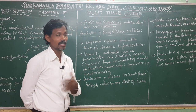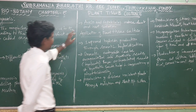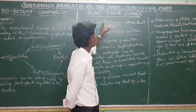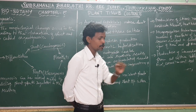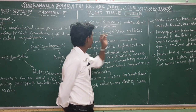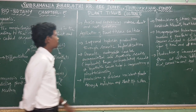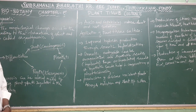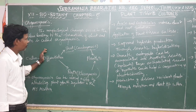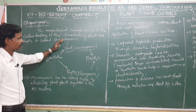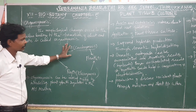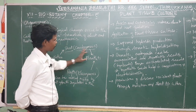The plant growth hormones include ethylene and abscisic acid. The action of plant growth hormones is important in organogenesis. Callus is differentiated into a shoot plantlet.